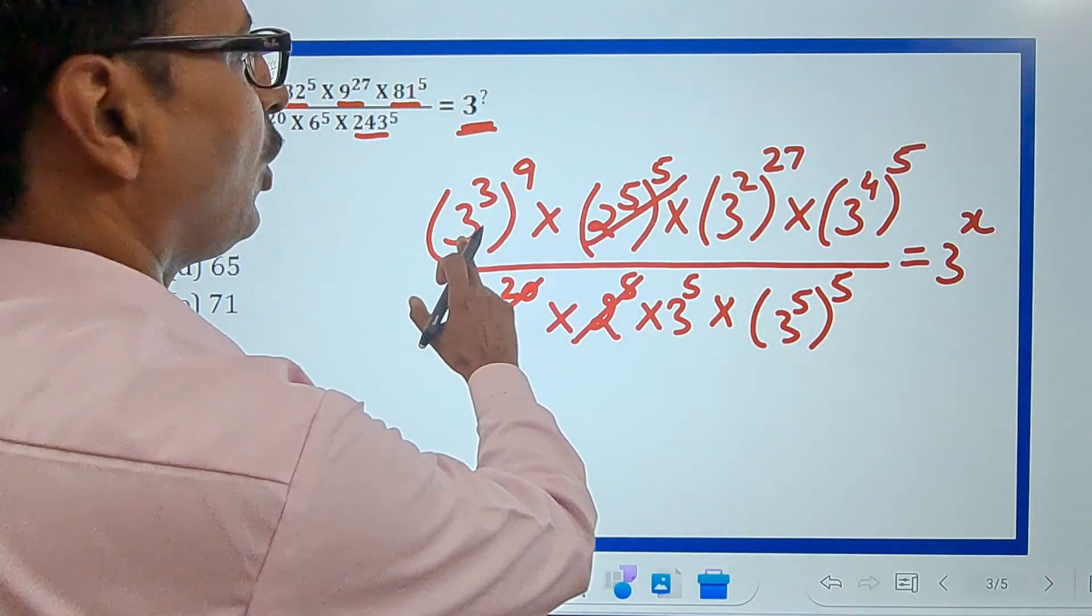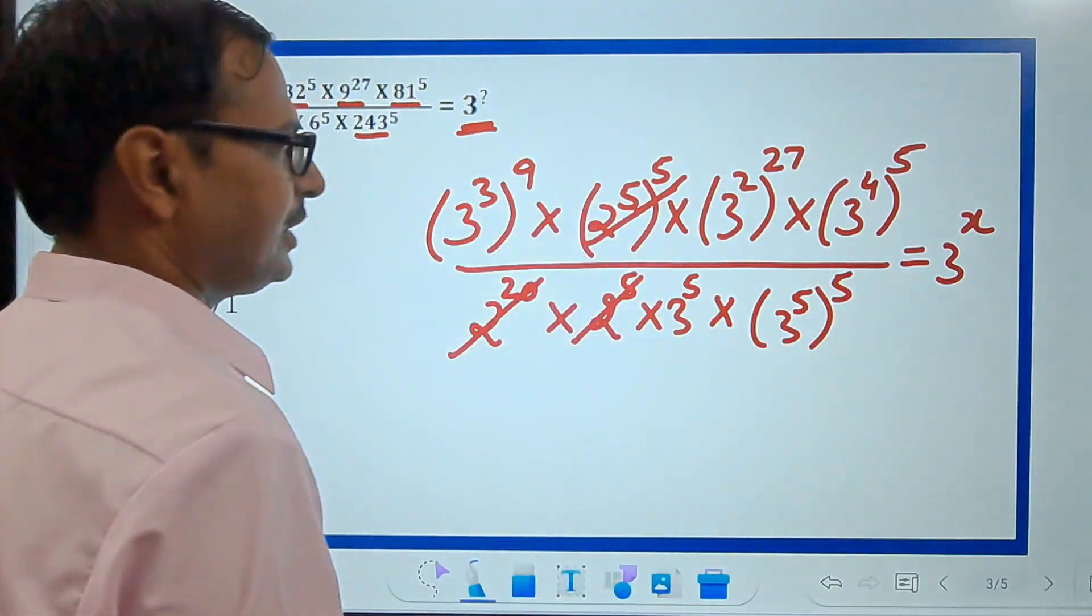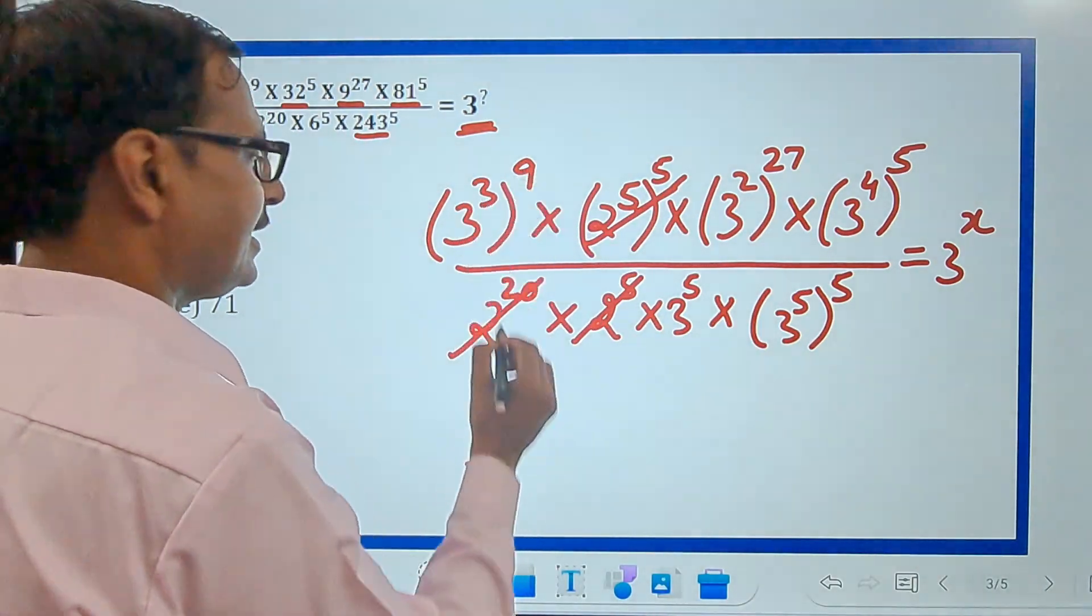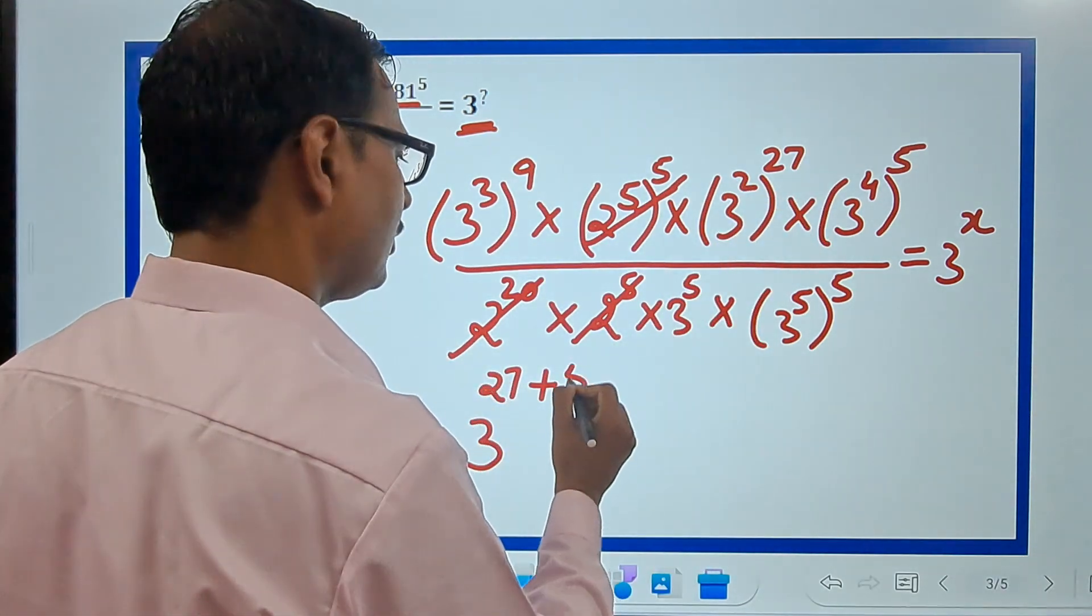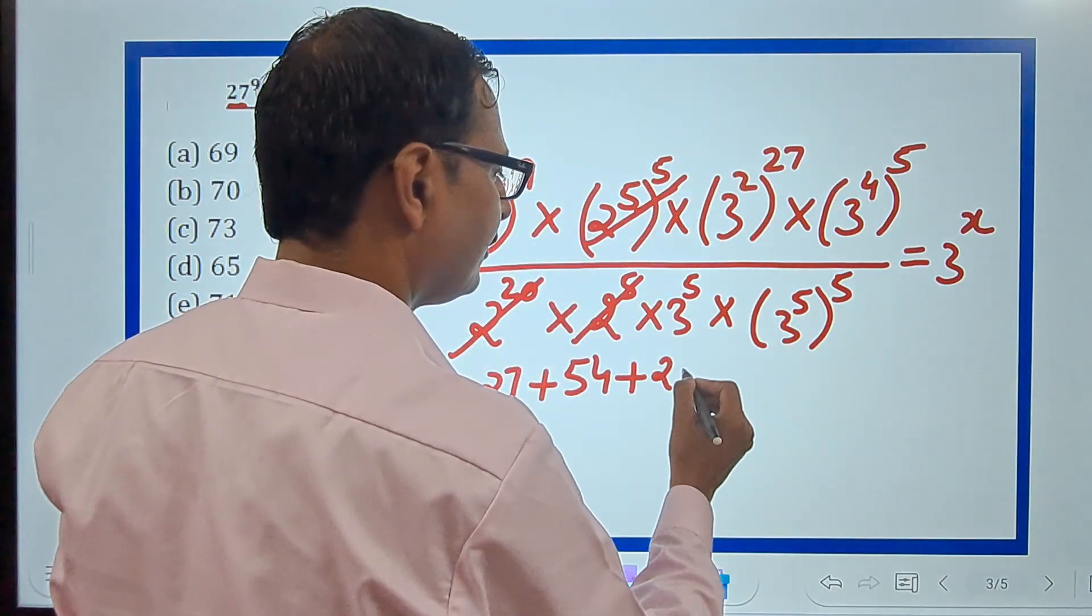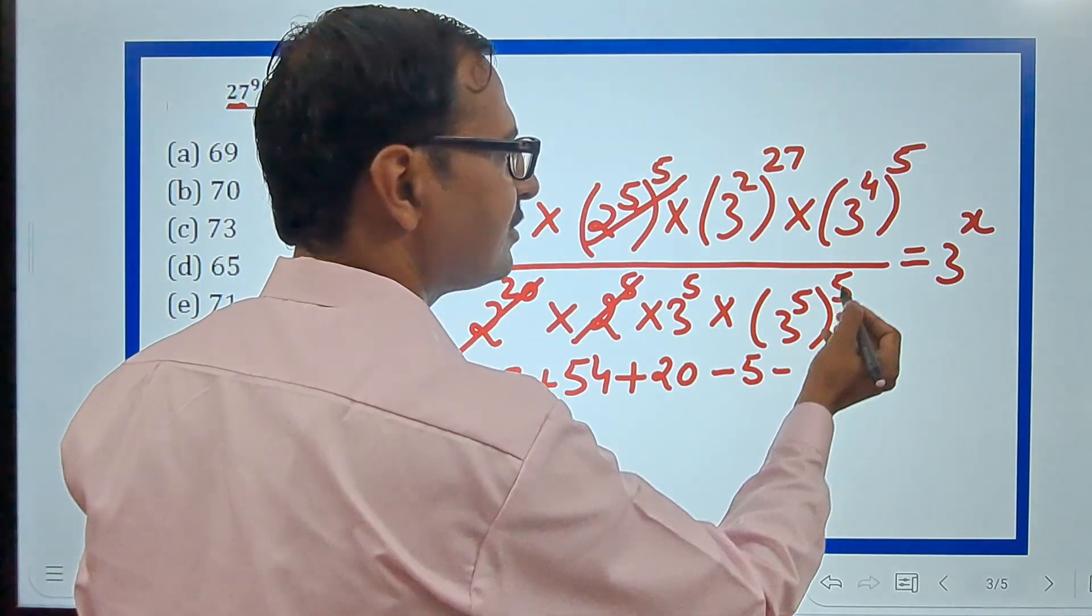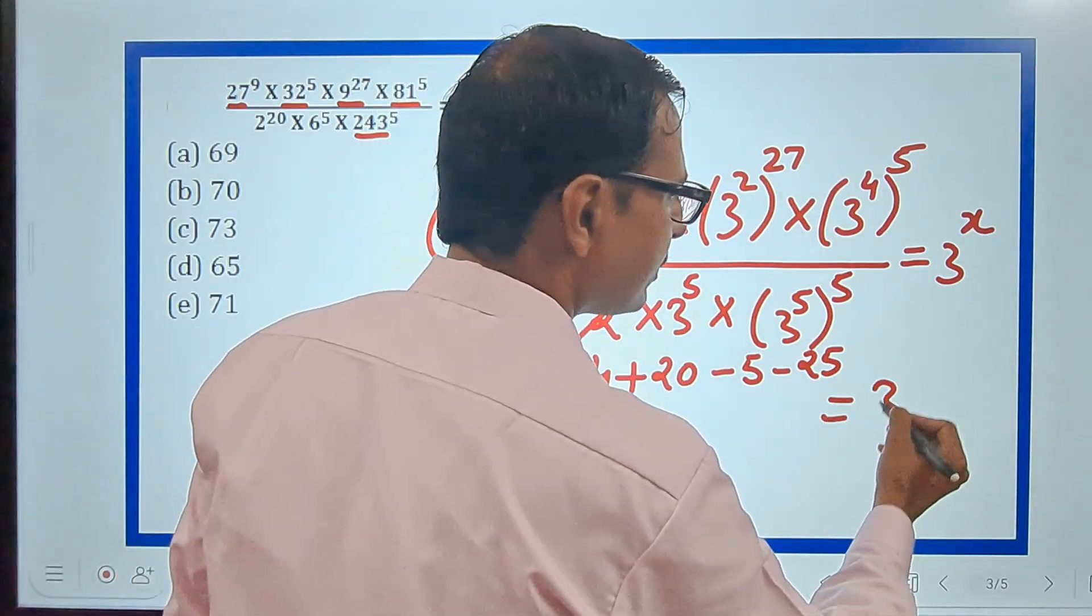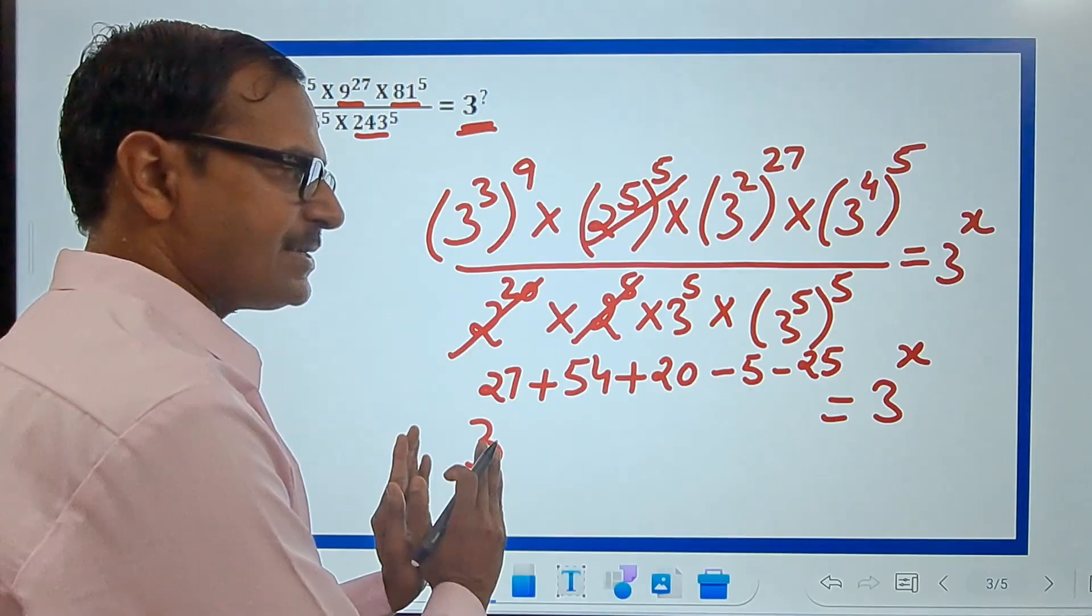Now we have all bases as 3. Let's apply the laws: 3 raised to power—9 times 3 is 27, plus 27 times 2 is 54, plus 5 times 4 is 20, minus 5 and minus 5, so 5s are 25—equals 3 raised to power x. I've reduced it to a common base.